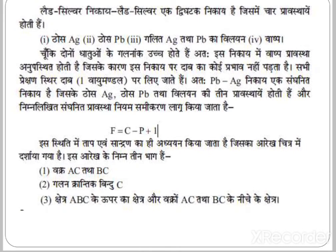Now we will discuss the lead-silver two-component system. Lead and silver is a two-component system. Using the condensed phase rule equation, F equals C minus P plus 1. In this system, only temperature and concentration are studied, as shown in the diagram.